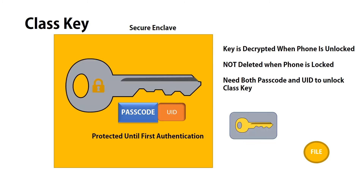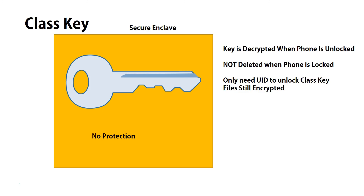The class key is used to encrypt the file key. Even though the no protection class is called no protection, these files are still encrypted. The only difference is that the user passcode does not need to be entered in order to decrypt this class key.